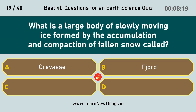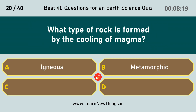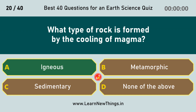What is a large body of slowly moving ice formed by the accumulation and compaction of fallen snow called? Glacier. What type of rock is formed by the cooling of magma? Igneous.